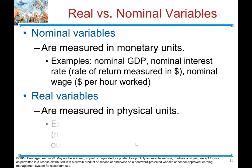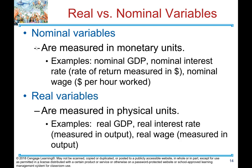Real versus nominal variables. Nominal variables are measured in monetary units — examples are nominal GDP, nominal interest rate (rate of return measured in dollars), and nominal wages (dollars per hour). Real variables are measured in physical units — examples include real GDP, real interest rate measured in output, and real wage measured in output.